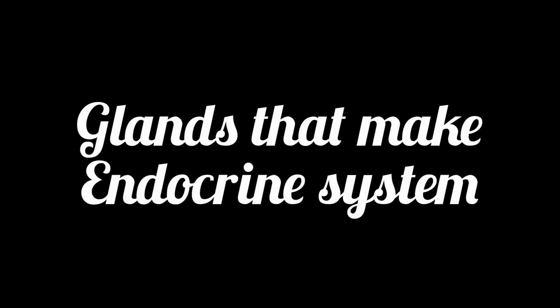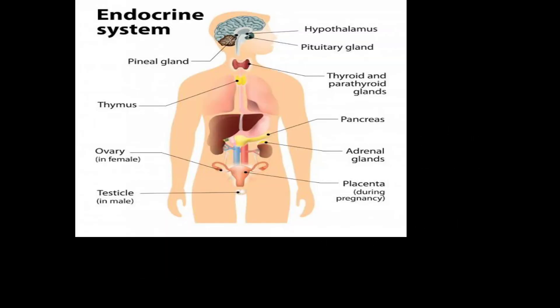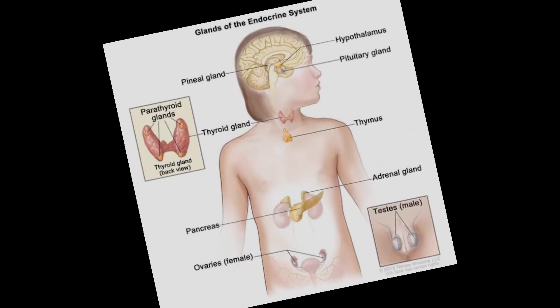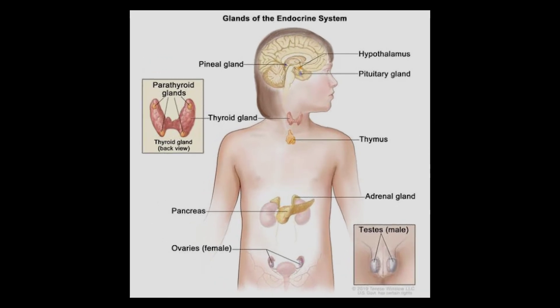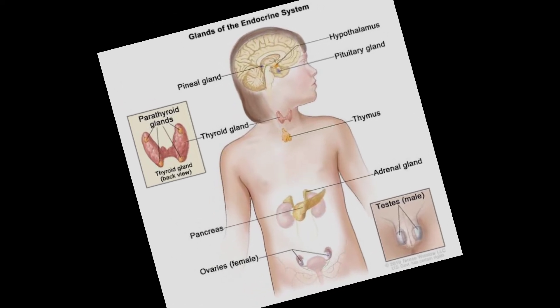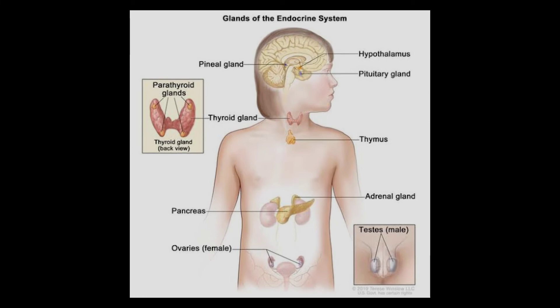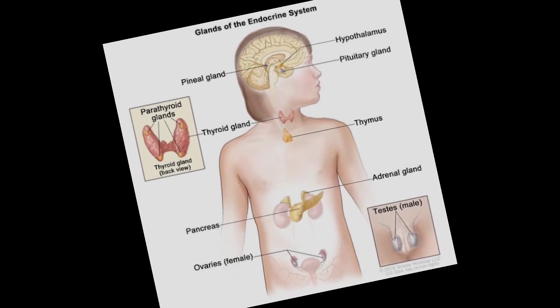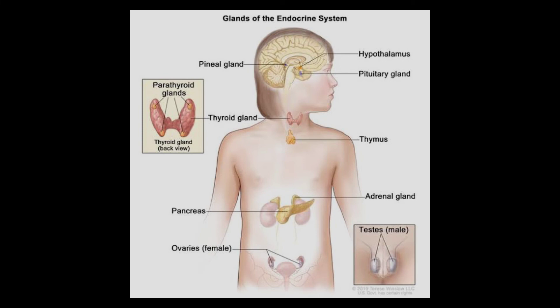Too much or too little of a hormone can harm the body, so medicines can treat many of these problems. Now let's look at the names of those glands that make up the whole endocrine system. These are: the hypothalamus, pituitary gland, thyroid gland, parathyroid gland, adrenal gland, pineal body, and the ovaries. These are the glands that release hormones, make up the endocrine system, and perform various functions.